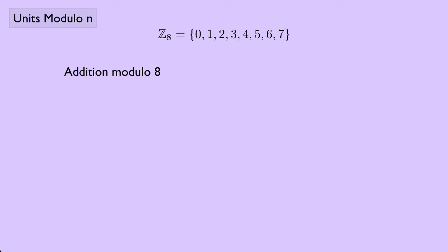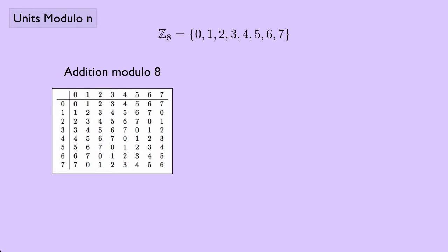We initially talked about addition modulo 8, and we can make a table for addition modulo 8. We can see, for instance, that something like 4 plus 5 would be 9, but 9 modulo 8 is 1.